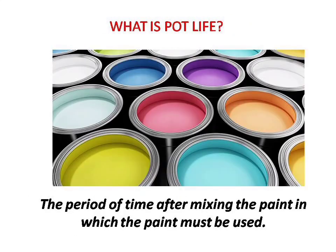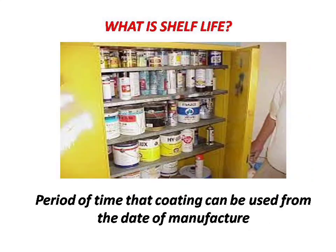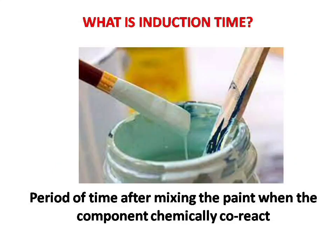Next question: what is pot life? Answer is: the period of time after mixing the paint in which the paint must be used. Next question: what is shelf life? Answer is: the period of time that a coating can be used from the date of manufacture. Next question: what is induction time? Answer is: the period of time after mixing the paint when the components chemically co-react.